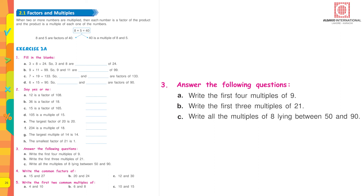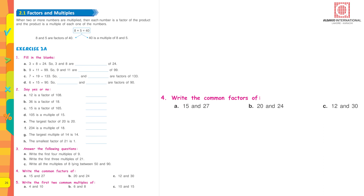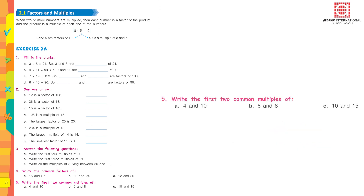Write the first 3 multiples of 21 — multiply 1, 2, and 3 with 21 to get the answers. Write all multiples of 8 lying between 50 and 90 — try this yourself. Write the common factors of 15 and 27. Factors of 15: 1, 3, 5, 15. Factors of 27: 1, 3, 7, 9. The common factors of 15 and 27 are 1 and 3.